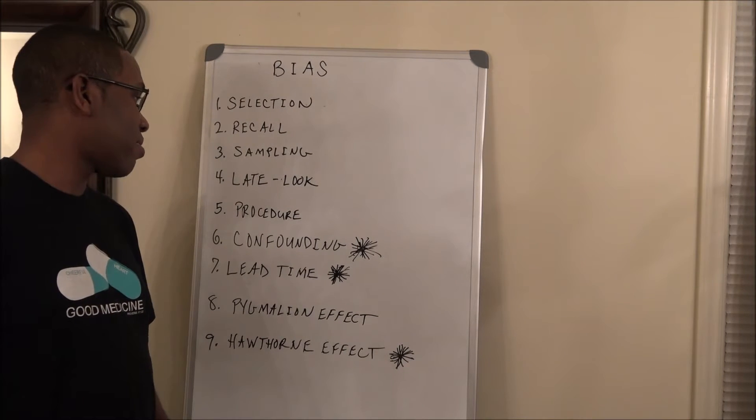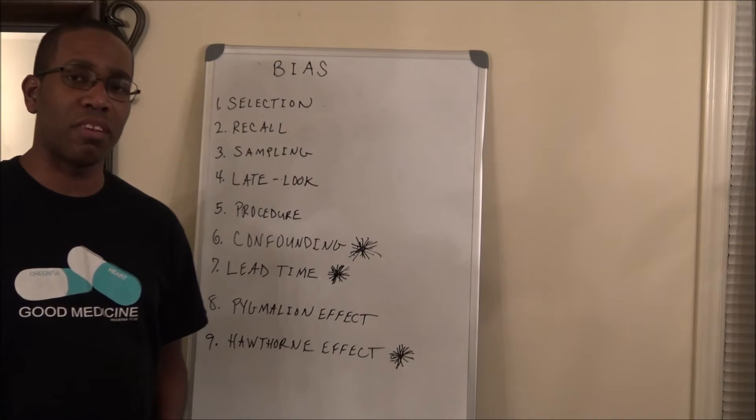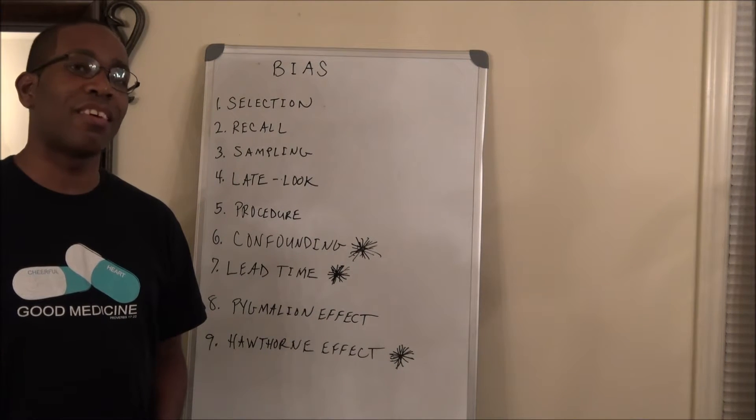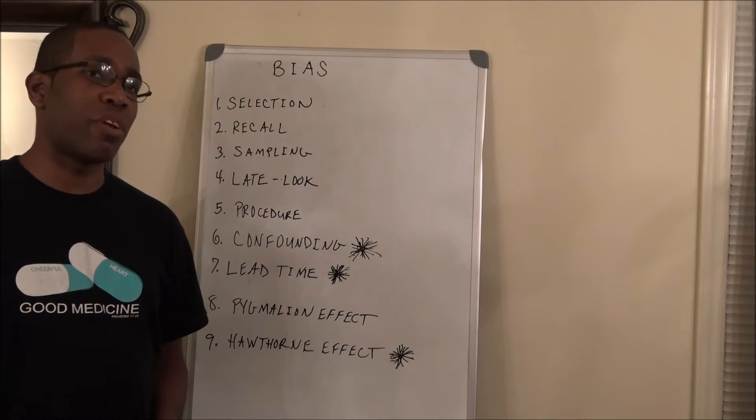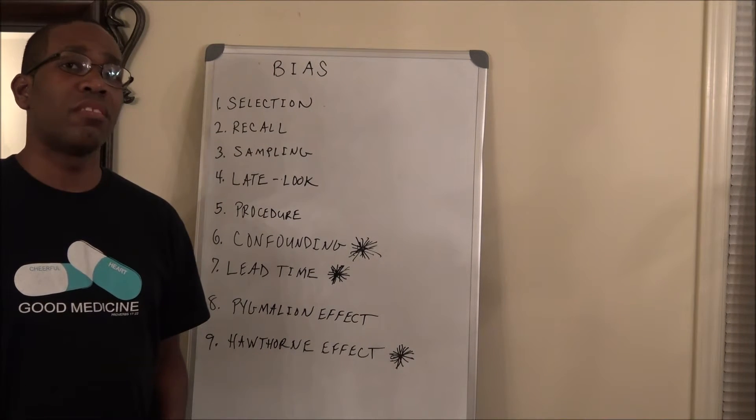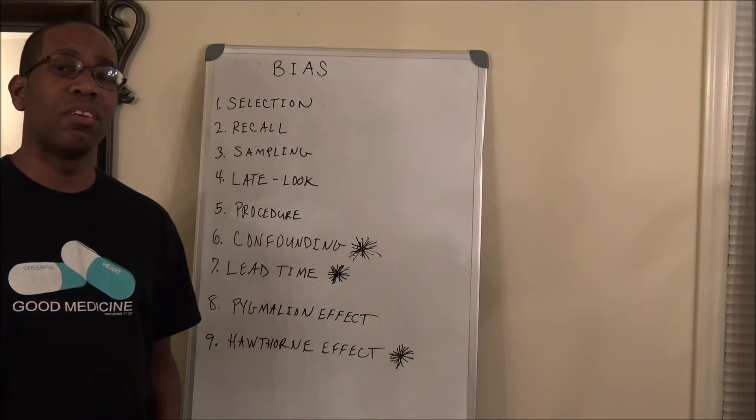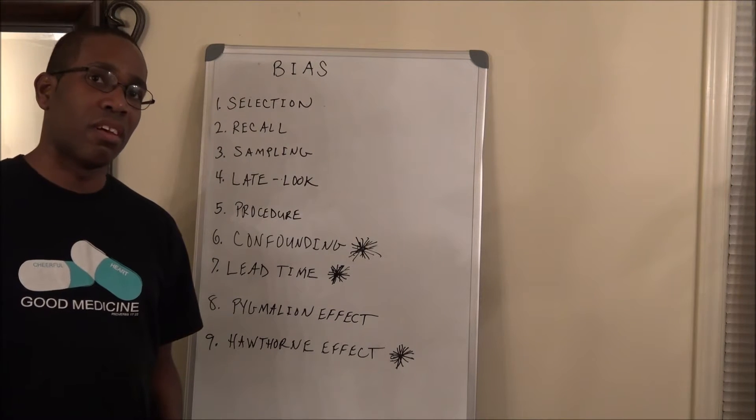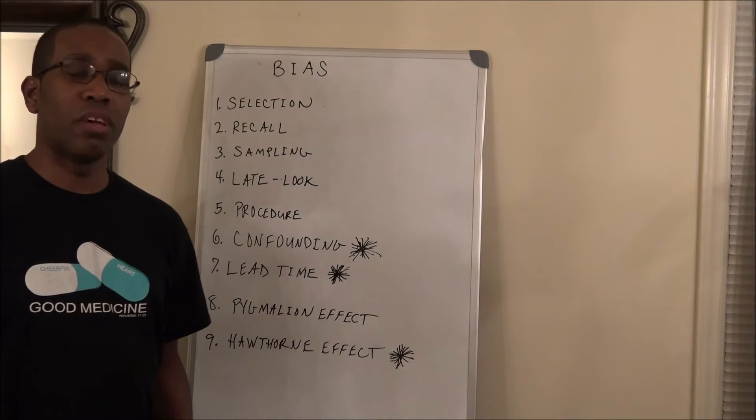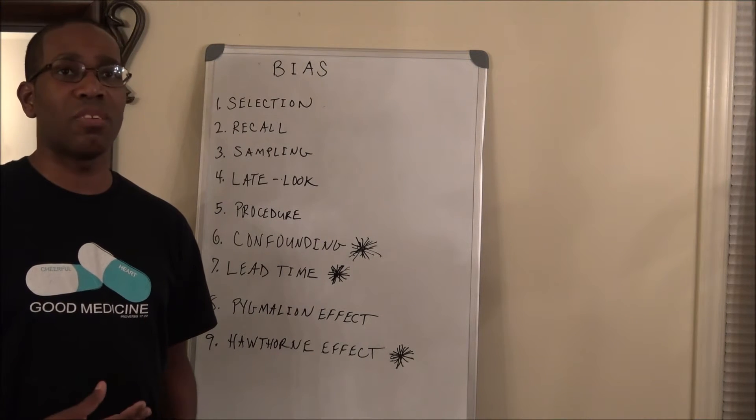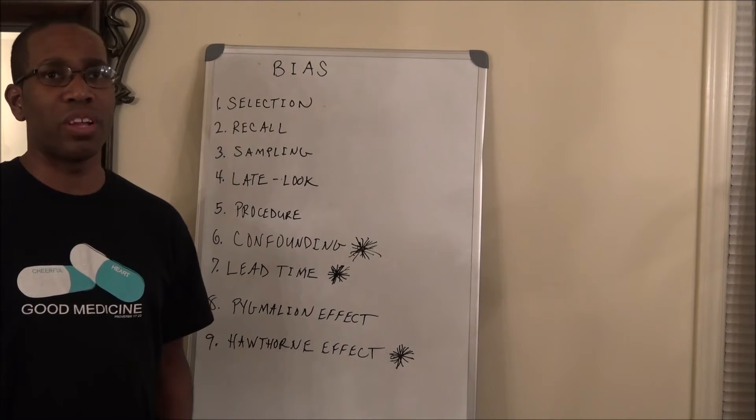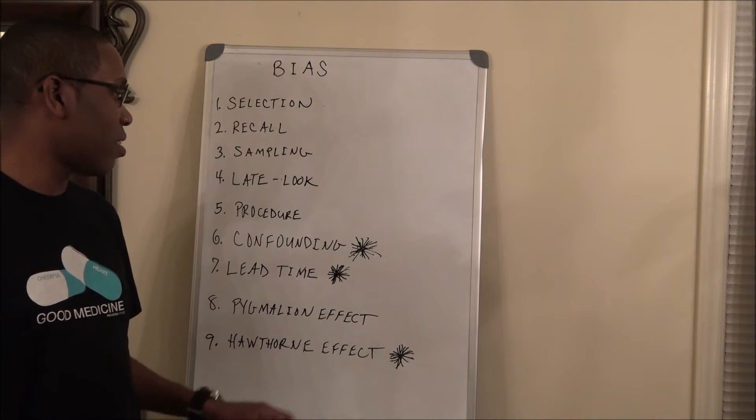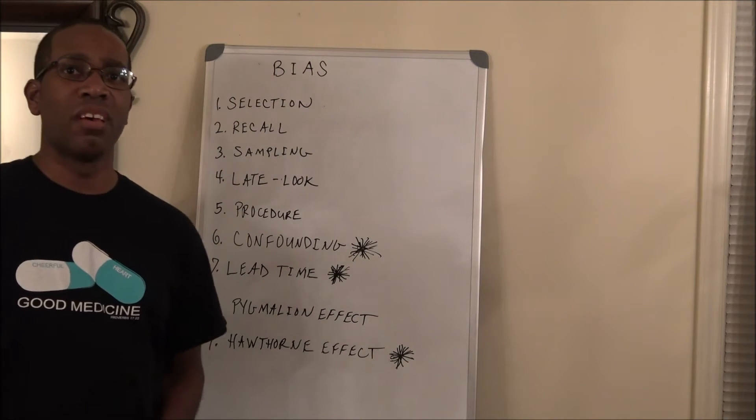Lead time bias is another high yield subject. Lead time bias is occurring with greater and greater frequency because of advancements in technology. Years ago, the screening tests for many types of cancer were not very accurate. You couldn't detect a certain type of cancer until it reached a certain size. Now you can detect cancer when it's getting smaller and smaller. With greater procedures where you can detect cancer, you're going to see issues with lead time bias. For example,